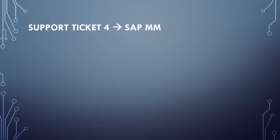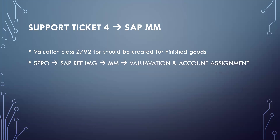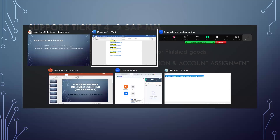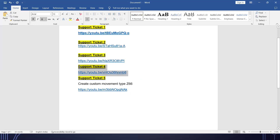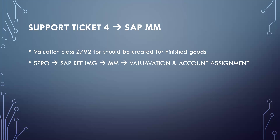Support ticket number four is SAP MM again. Valuation class Z792 should be created for finished goods. We create this in SPRO, SAP Reference IMG, Material Management, Valuation and Account Assignment. I have created valuation class Z792 and made the necessary changes.